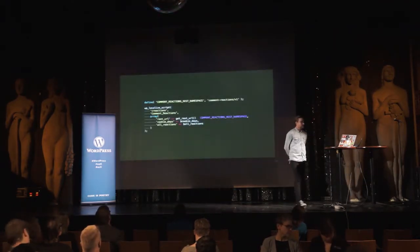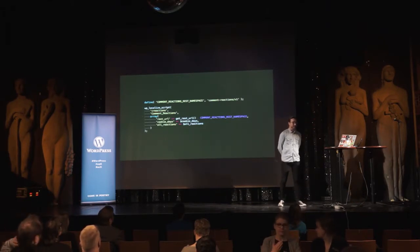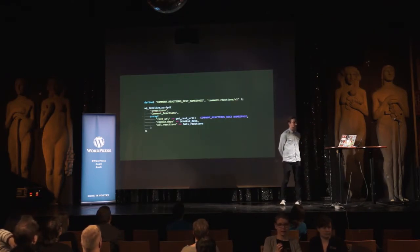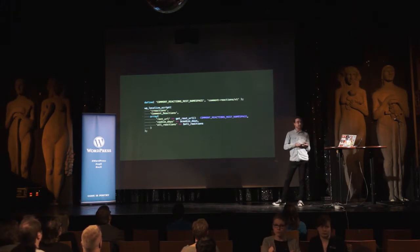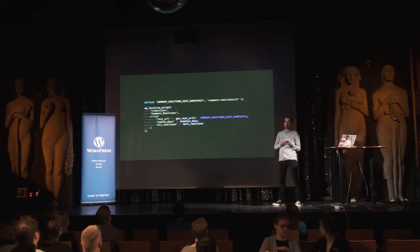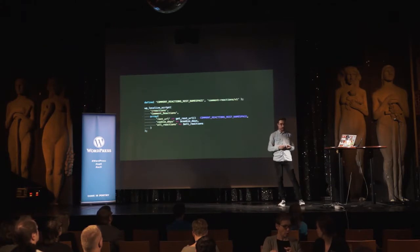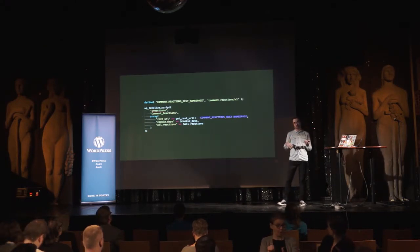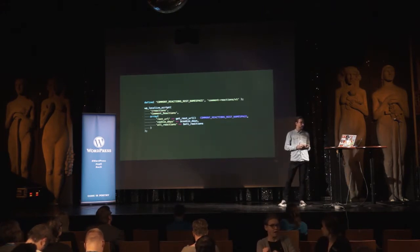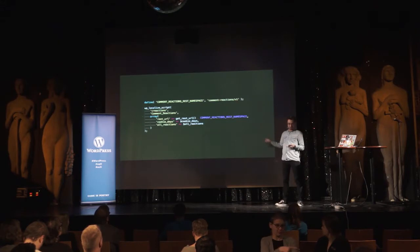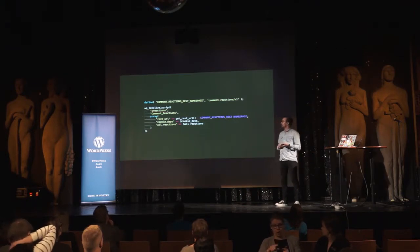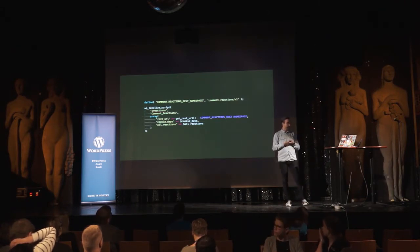Now I'll describe the same pieces for the REST version. The localized script part is pretty much the same, except that we define a REST namespace here — it's the URL part that gives the endpoint a namespace. It's the name of the plugin, comment-reactions/v1, where v1 is the version number, which we can later change without affecting the old API if we want to keep serving it as well. Instead of giving the Ajax URL, we are giving the REST URL using the get_rest_url function, now available in 4.4, and then appending that namespace after it.